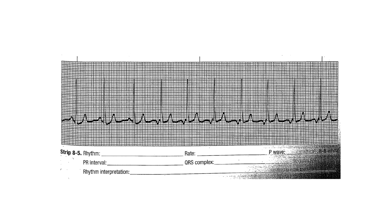We call it accelerated junctional because the heart rate is above 60 - a normal junctional rhythm is 40 to 60, and this one is at 94. This probably wouldn't cause hemodynamic issues since the heart rate is maintained, but it doesn't mean you shouldn't be assessing and making sure this is not continuing.